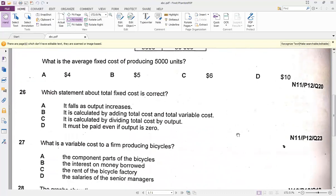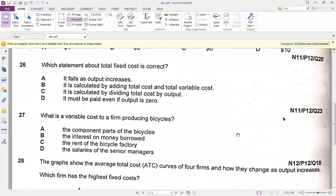Moving to question 26: which statement about the total cost is correct? Now total fixed cost - does it fall as output increases? It is calculated by adding total cost and variable cost, is it true? It is not, but how can we make it true? If we subtract total cost with the variable cost, yes then we can get it. But option A is the correct one.